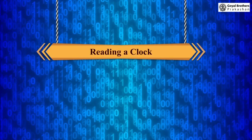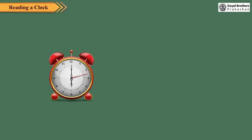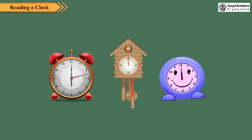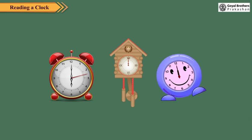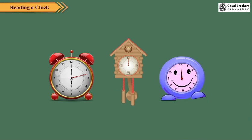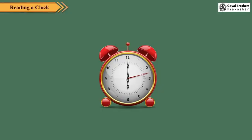Reading a Clock. Did you ever observe a clock carefully? Look at these clocks. A clock tells us time in hours and minutes. The face of the clock is called its dial. On its dial, numbers from 1 to 12 are marked at equal intervals.